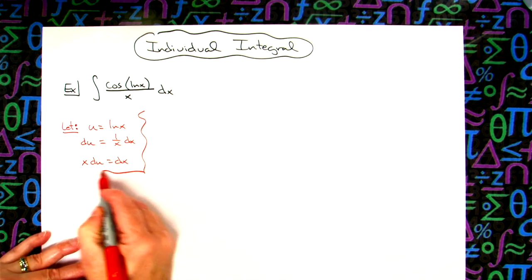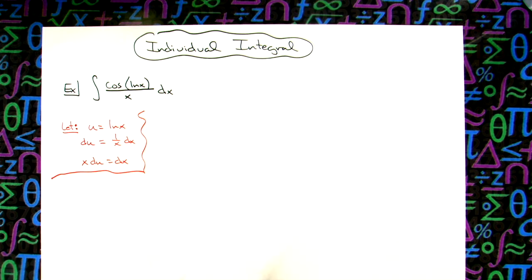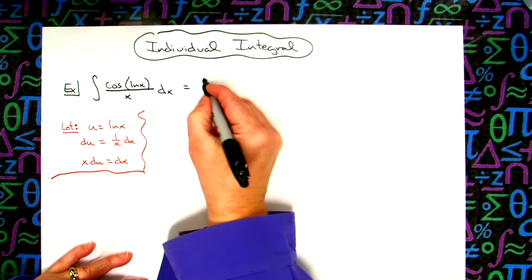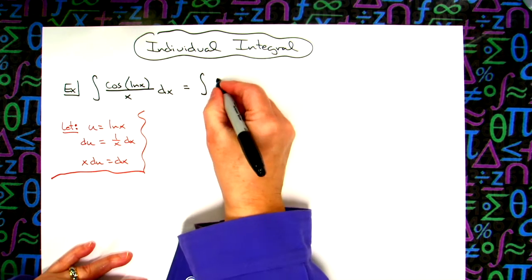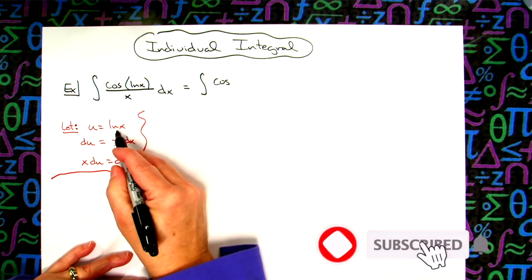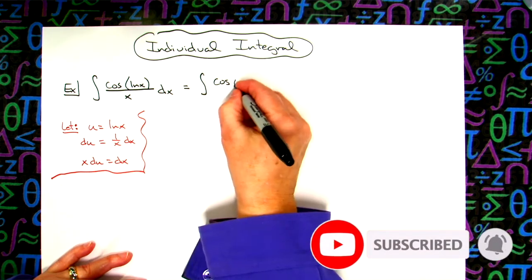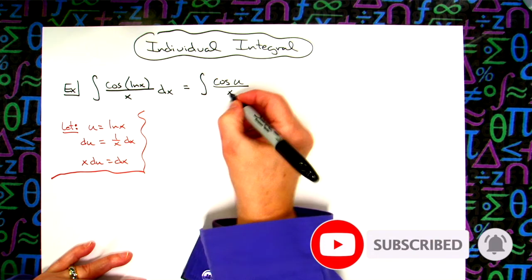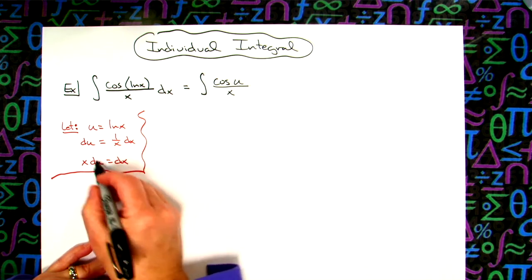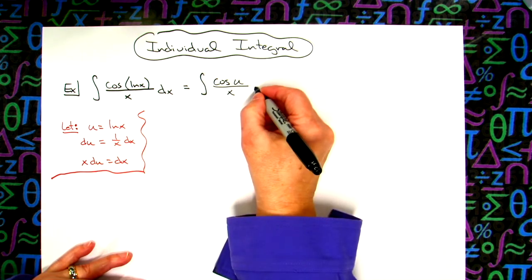All right, after that first initial step, then we're going to come back up here at the beginning and we're going to start doing our substitutions. So we'll keep the cosine function. We'll replace natural log of x. We'll keep the x on the bottom. The dx is going to be replaced with x du.